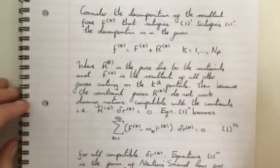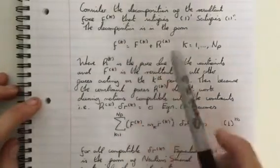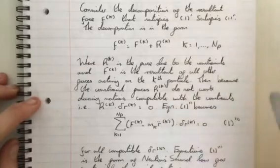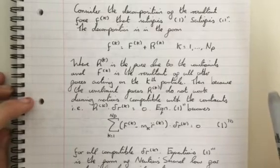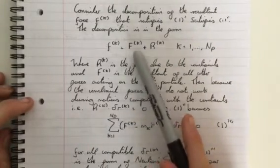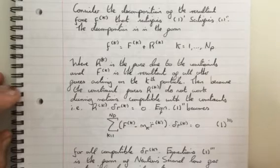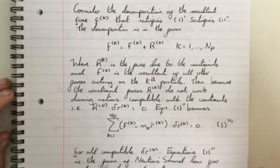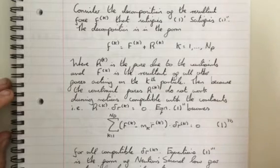So now we're going to consider the decomposition of our force. Our force Fk satisfies Newton's second law. The decomposition is in the form Fk equals capital Fk plus capital Rk as k equals 1 to np, where Rk is the force due to the constraints and capital Fk is the resultant of all other forces acting on the kth particle.